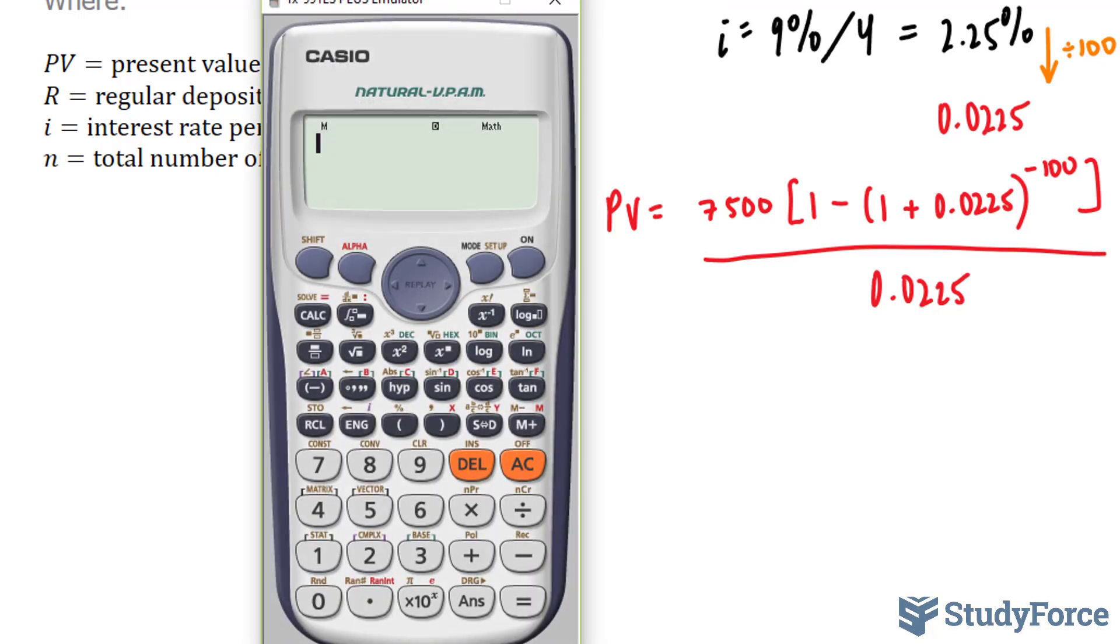7,500, I'm starting at the top, bracket 1 minus bracket 1 plus 0.0225 to the power of negative 100. And the numerator should give us that number divided by 0.0225.